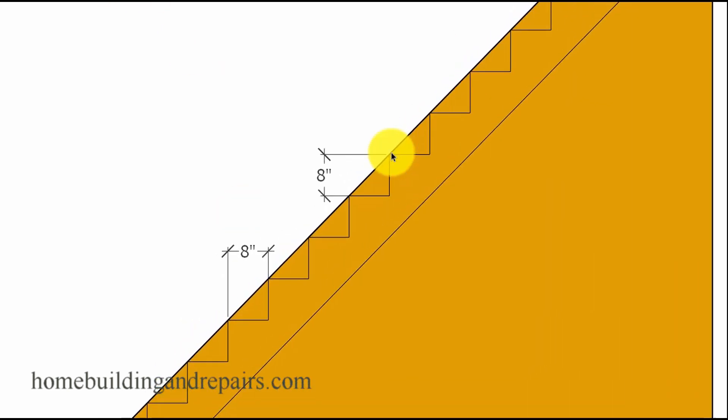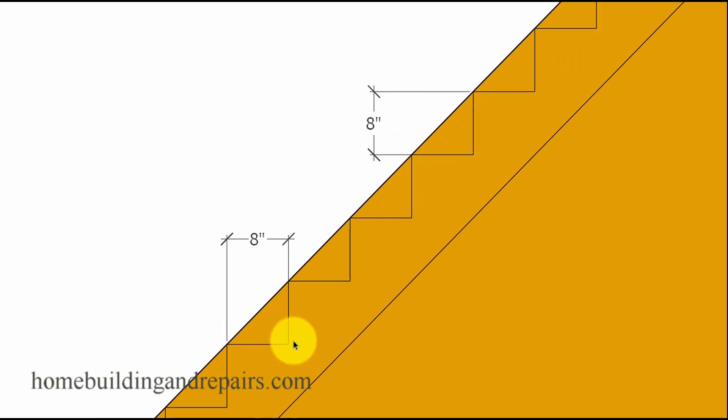So here we have the same measurement. If this was going to be seven inches, this is going to be seven inches. Don't forget that the maximum riser height for residential stairway construction is seven and three-quarters inches, and that would not work for the tread. The minimum distance for a tread is 10 inches and that probably won't make the building inspector happy.